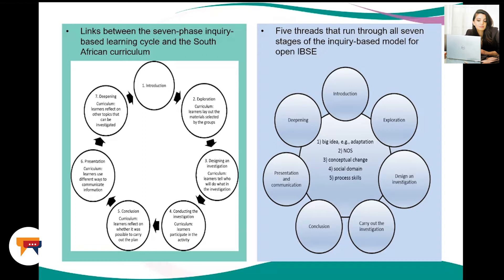The five threads that run through all seven stages of the inquiry-based model are: big ideas, the nature of science, conceptual change, the social domain, and process skills. All of this was discussed in the previous learning unit. It's very important that you take what you've learned in previous learning units and incorporate it so you can apply your knowledge when doing your team planning and lesson planning. The social domain includes group activities and communication activities where students interact, while process skills include classifying, comparing, and all that was discussed previously.